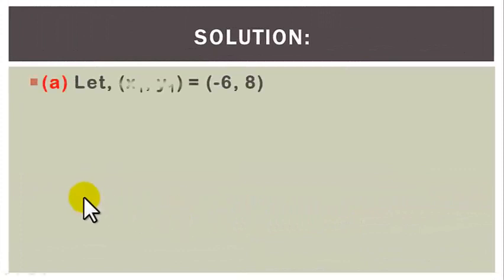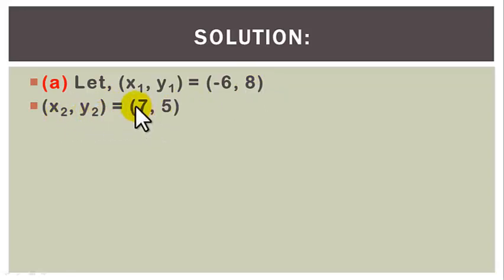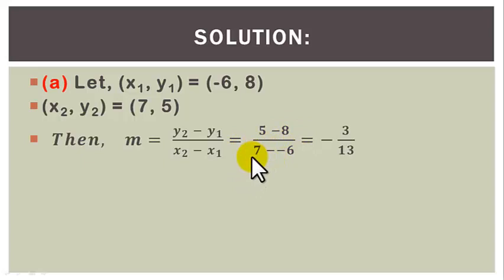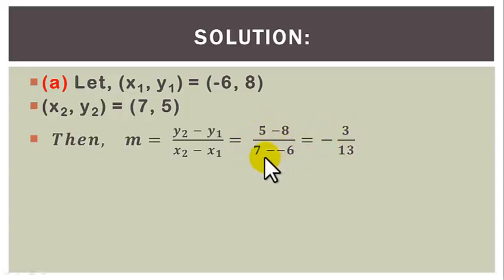Solution. A. Let (x1, y1) be the point (minus 6, 8) and (x2, y2) be the point (7, 5). Then the slope m is equal to y2 minus y1 all over x2 minus x1, which is equal to 5 minus 8 divided by 7 minus (minus 6). That gives us minus 3 divided by 13. So the slope of this straight line is m equal to minus 3 over 13.